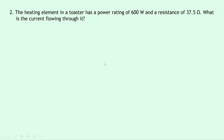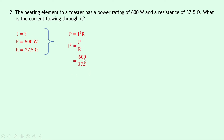Question two says that the heating element in a toaster has a power rating of 600 watts and a resistance of 37.5 ohms. What is the current flowing through it? Writing down what we know: we're trying to find current I, the power P is 600 watts, and the resistance R is 37.5 ohms. Our equation is P = I²R. Rearranging by dividing both sides by R gives I² = P/R. Substituting gives 600 divided by 37.5, which equals 16. Taking the square root of both sides gives I = √16, which equals 4 amps.